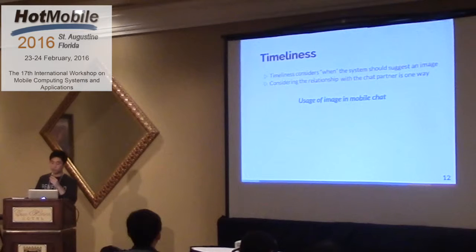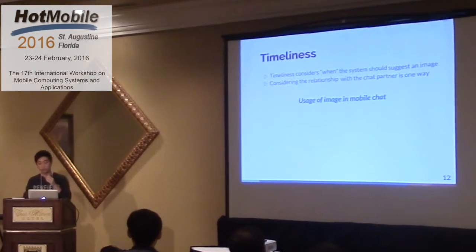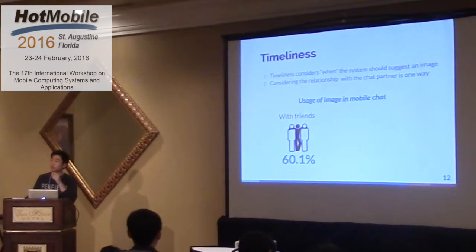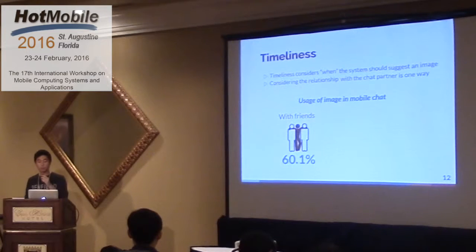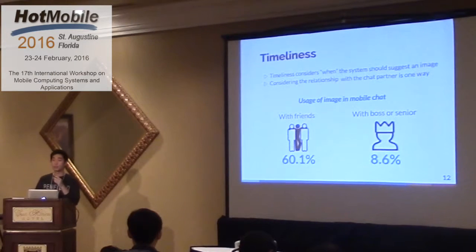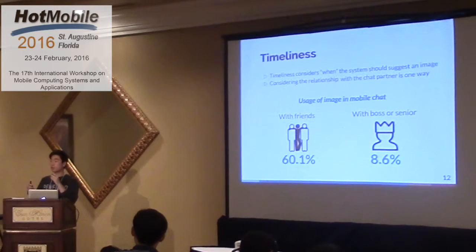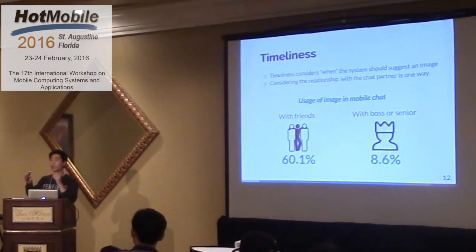The timeliness problem is interestingly related to the relationship with your chat partner — we found this from our survey. 60% of users said they don't actively use images when talking with friends in mobile chat, but just 8% actively use images with their boss or senior. So Millicat should have the functionality to distinguish the relationship between you and your chat partner.